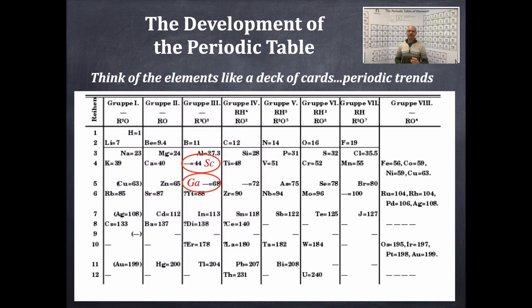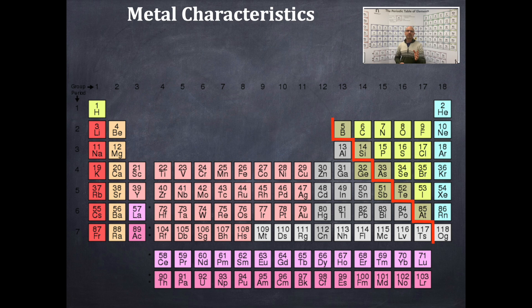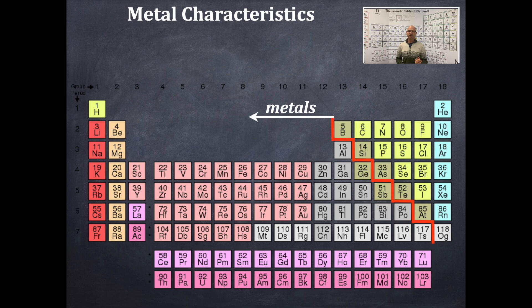Here are three elements Mendeleev predicted that were yet undiscovered: scandium, gallium, and germanium. Moving on to the characteristics of metals — first, we need to figure out where metals and non-metals are. Do you see that orange staircase line? Everything to the right is a non-metal; everything to the left is a metal, excluding hydrogen, which is most certainly a non-metal.